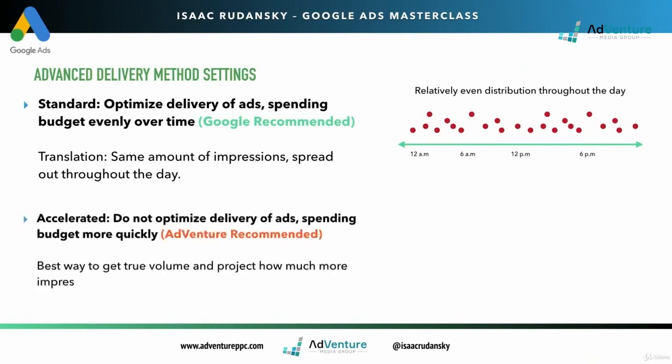If I choose accelerated delivery, I'm not optimizing the delivery of the ads. I'm spending my budget more quickly, getting them as soon as possible. That's what I recommend at Adventure Media. It's the best way to get true volume and project how much more impressions are available for your keywords.